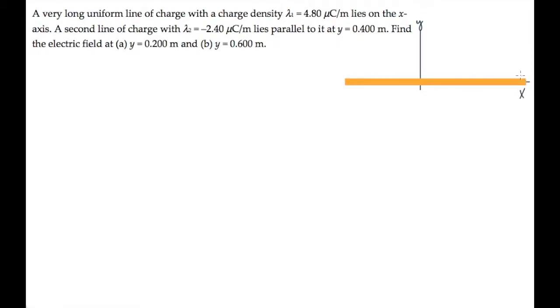The first line charge in this problem is positive, so I'll draw it orange, and it lies on the x-axis. The second one is negative, so I'll draw it in a light blue color, and it lies at a position y equals 0.4 meters above the x-axis. We're asked to find the electric field at two locations: here between the two line charges, and up here at y equals 0.6 above both of them.